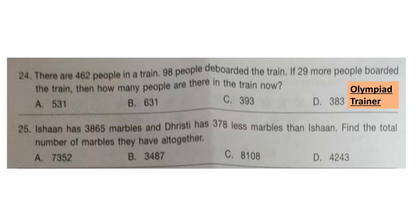Question 25. Ishan has 3865 marbles and Drishti has 378 fewer marbles than Ishan. Find the total number of marbles they have altogether. Subtract 378 from 3865 to get Drishti's count: 3487 marbles. Add both numbers together. The correct answer is option A: 7352.